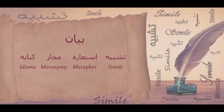Bayan, on the other hand, discusses only four subjects: Tashbih, Istiare, Majaz, and Kenaiye. But these four are the most important features of any poem. Without them, a poem is hardly called a poem. They are universals — you can find them in poems written in any language in the world. Just the names are different, some characteristics are different, but they are there.